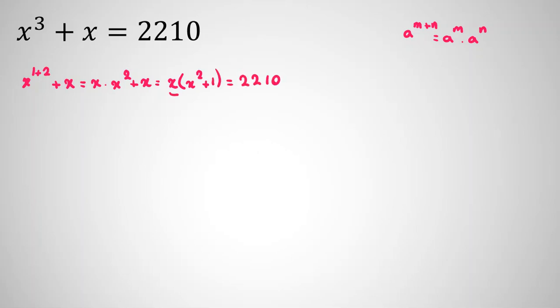I want to factorize 2210 because I factorized the left hand side. If it has an integer solution, let's try it. It's 10 times 201.